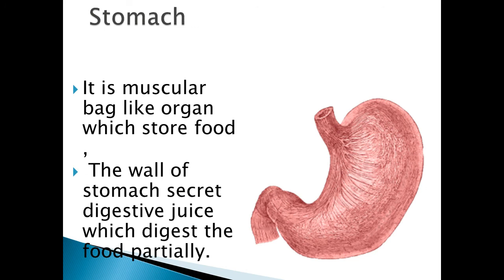Stomach. Esophagus connects to the stomach. Stomach is a muscular bag-like organ which stores food. The wall of the stomach secretes digestive juice which digests the food partially.